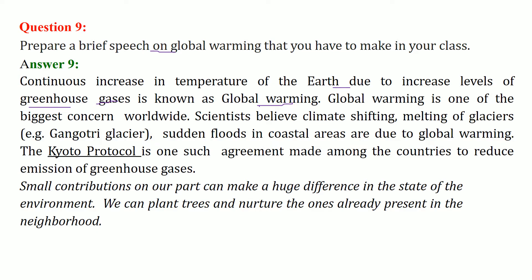Global warming is the biggest concern worldwide. Scientists believe climate shifting, melting of glaciers, and sudden floods in coastal regions are all due to global warming. The Kyoto Protocol and the Paris Accord are international agreements where countries meet to reduce the emission of greenhouse gases. Small contributions at an individual level can make a huge difference. You need to plant trees, nurture them, and try to minimize the production of greenhouse gases as much as possible.